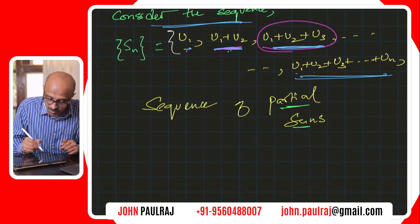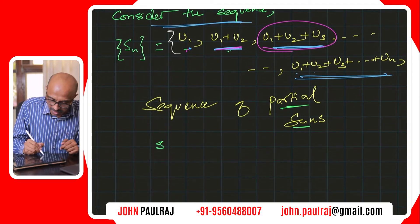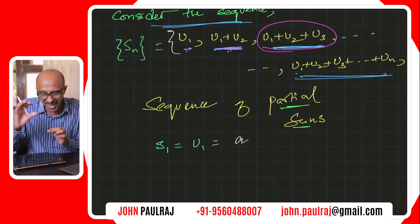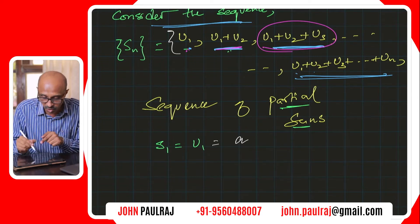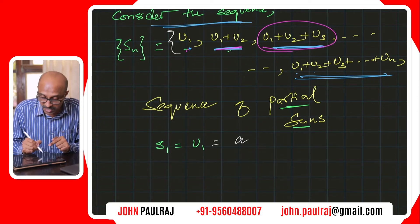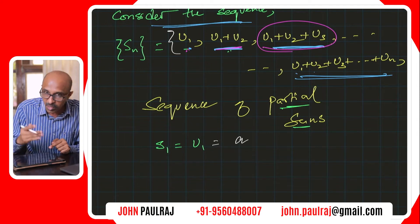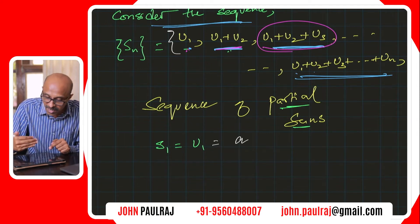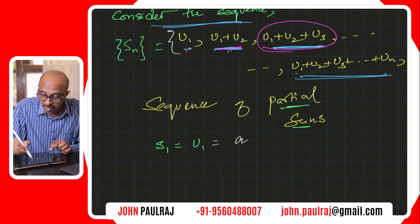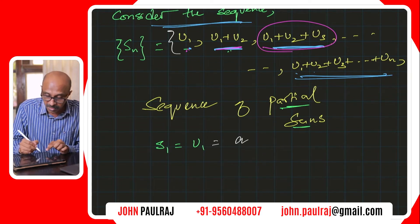Each term of this new sequence can be written like this. S1 is just U1. We've already said in a previous video that universally A represents the first term, so A is the same thing as U1. S1, the first partial sum of this new sequence derived from the original sequence, is just equal to U1.